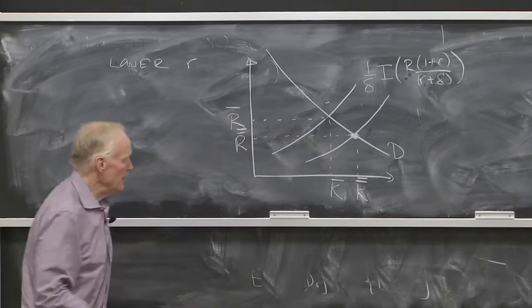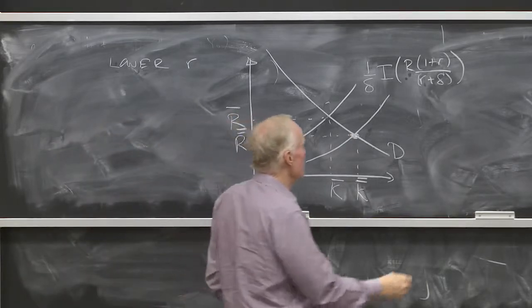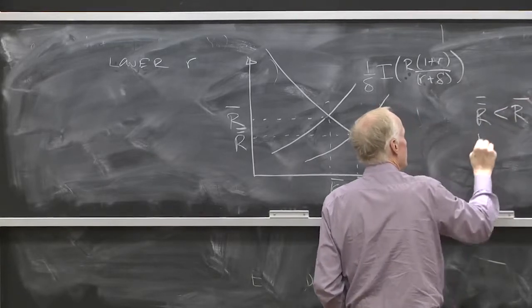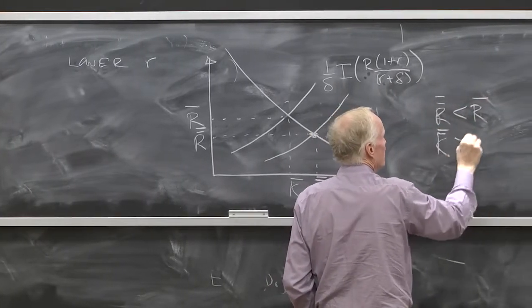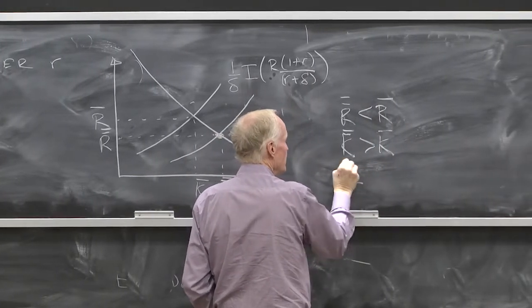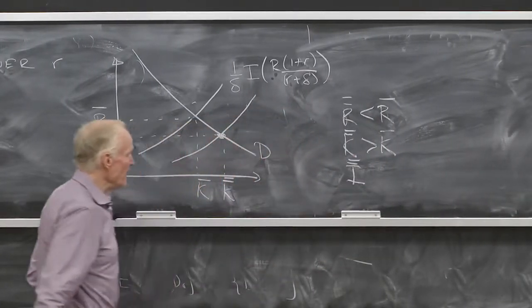But think about it. In this new equilibrium, R double bar is less than R bar, K double bar is greater than K bar. I double bar, which you can't read directly off this graph, but we know,